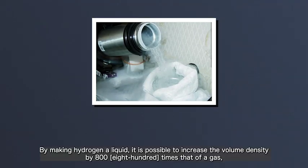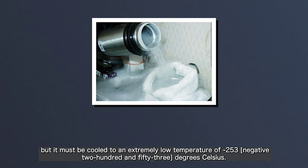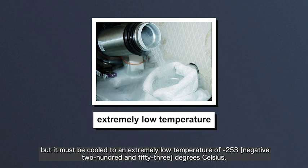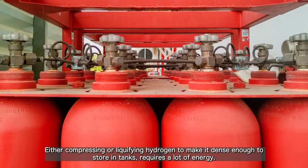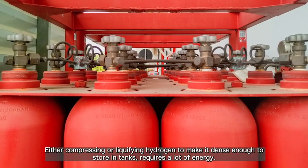By making hydrogen a liquid, it is possible to increase the volume density by 800 times that of a gas. But it must be cooled to an extremely low temperature of negative 253 degrees Celsius. Either compressing or liquefying hydrogen to make it dense enough to store in tanks requires a lot of energy.